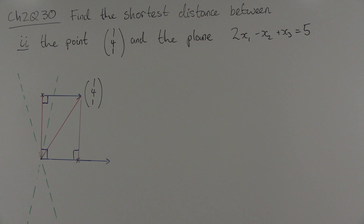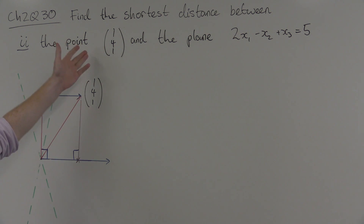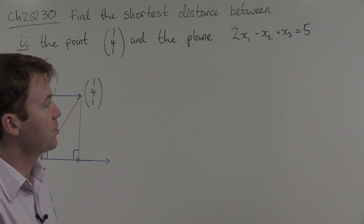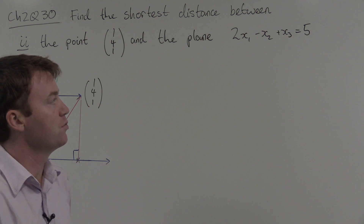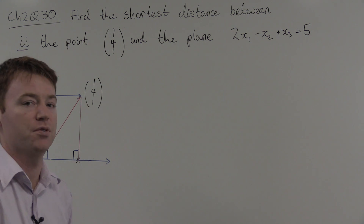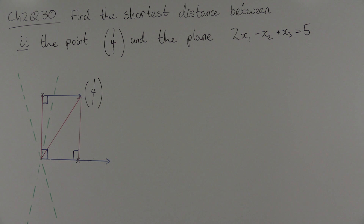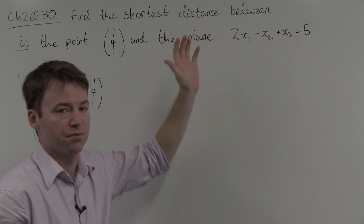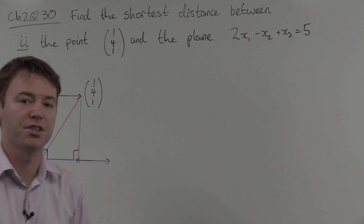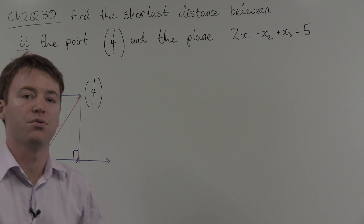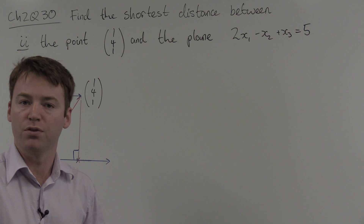And now for part 2. Find the shortest distance between the point (1, 4, 1) and the plane 2x₁ - x₂ + x₃ = 5. The difference between this question and the previous question is that you are given the plane in Cartesian form and you must convert it into point-normal form.